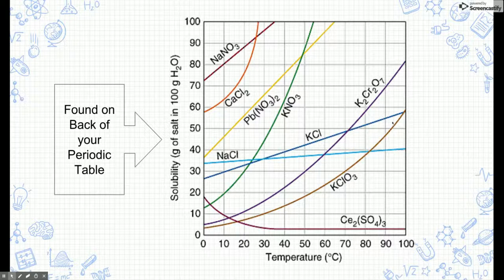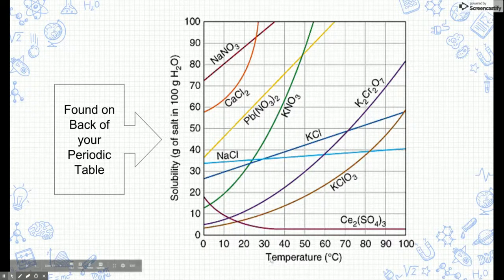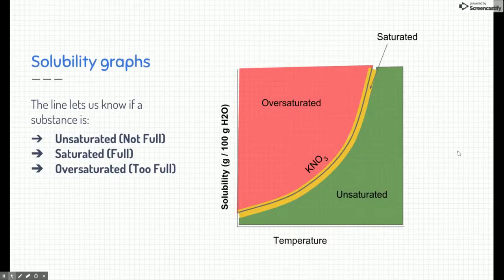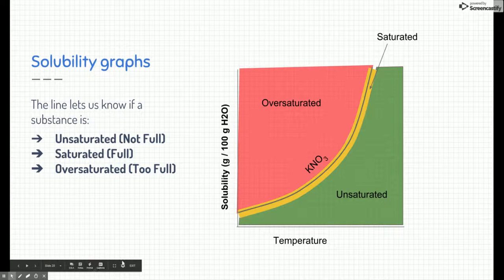And we're wondering how much or how many grams we can dissolve at a given temperature, which is our other variable. So let's take a closer look at that. Before we do that, let's explain what we're looking at. We're going to isolate potassium nitrate. So if you look over here, here's potassium nitrate. And this is the line for potassium nitrate.